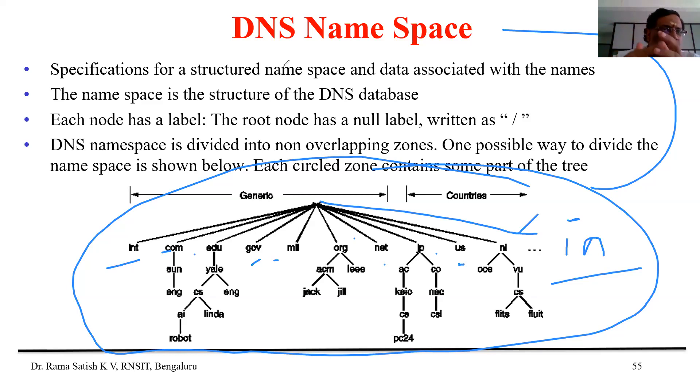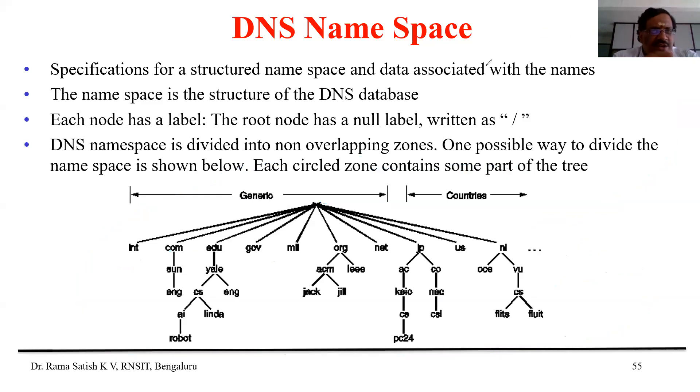It's stored as a structure. The namespace is a structure of DNS entirely. Each name node is labeled with their root and it's a tree that is being maintained. This tree, the entire tree, you call it as a namespace where all the names of the servers are maintained as a tree.